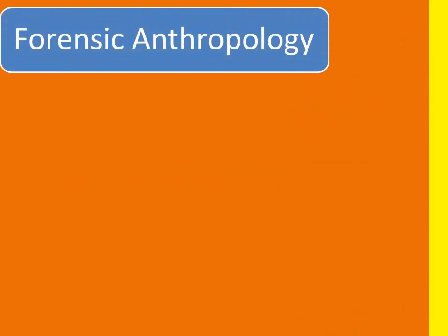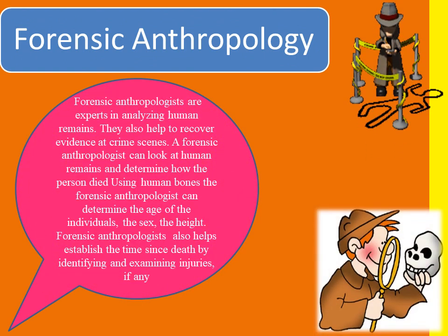Forensic Anthropology involves experts analyzing human remains, because in some situations a body may be in an unrecognizable state. Forensic Anthropologists can examine human remains to determine how a person died and help recover evidence at the crime scene. Using human bones, they can determine the individual's age, gender, and height. For example, if a skull is found, they can determine if it is male or female — female skulls are smoother, while male lower jaws are square with about a 90-degree angle. Forensic Anthropologists also help establish the time since death by examining injuries.